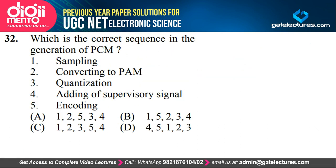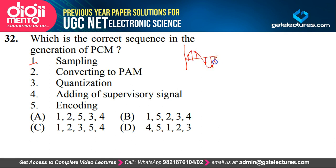Look at the next question. What is the correct sequence in the generation of PCM? PCM is basically pulse coded modulation — we are taking an analog signal and converting it into a digital signal for purpose of transmission. In this generation of PCM, firstly you are going to sample the signal. Sampling means you are going to have some signal and take samples of it — multiplying the signal with an impulse train to obtain some samples.